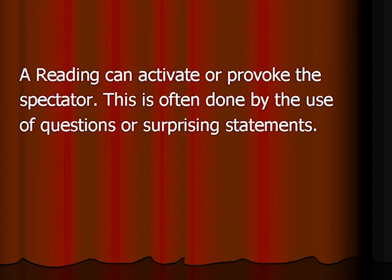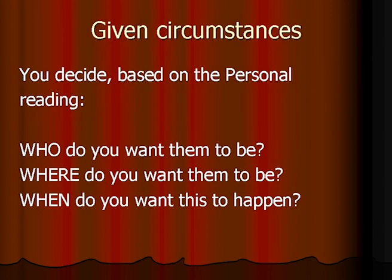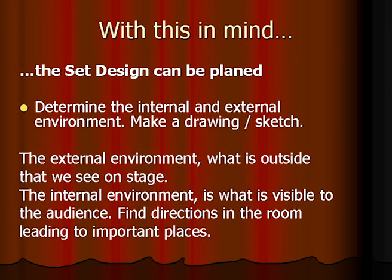When you have decided your personal reading, you now have to decide who you want the characters to be in the story and where you want them to be. It could be written for us, but maybe you want to change it to another place. And when do you want this to take place? These are the given circumstances. From there you can start to work with the set design — determine and decide the internal and the external environment, and make a drawing or a sketch. Internal is what you see on stage; external is what the actors or characters refer to outside of what we see on stage.